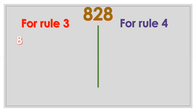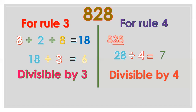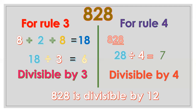828. For divisibility by 3: 8 plus 2 plus 8 equals 18, and 18 divided by 3 equals 6, so it is divisible by 3. For divisibility by 4, the last two digits are 28. Since 28 divided by 4 equals 7, it is divisible by 4. Therefore, 828 is also divisible by 12.